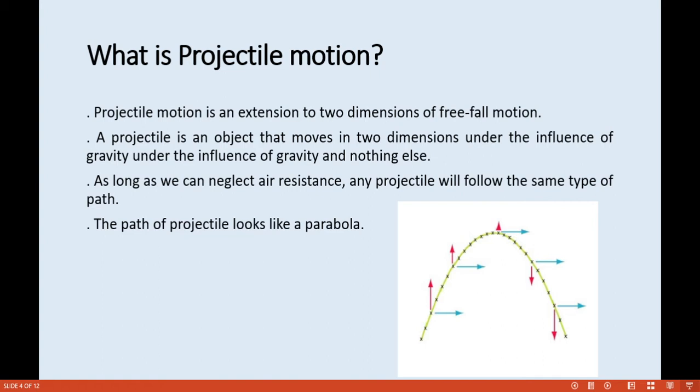Projectile motion is an extension to two dimensions of free-fall motion. A projectile is an object that moves in two dimensions under the influence of gravity and nothing else. As long as we can neglect air resistance, any projectile will follow the same type of path. As you can see in the illustration, the path curves downward — this path is called a parabola.